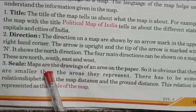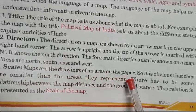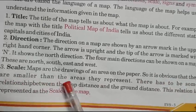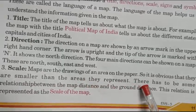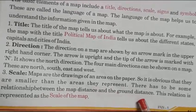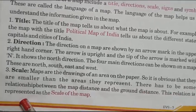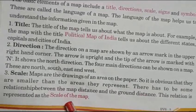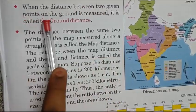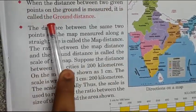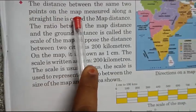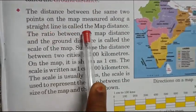Scale. Maps are drawings of an area on paper, so it is obvious that they are smaller than the areas they represent. There has to be some relationship between the map distance and the ground distance. When the distance between two given points on the ground is measured, it is called the ground distance. The distance between the same two points on the map measured along a straight line is called the map distance.